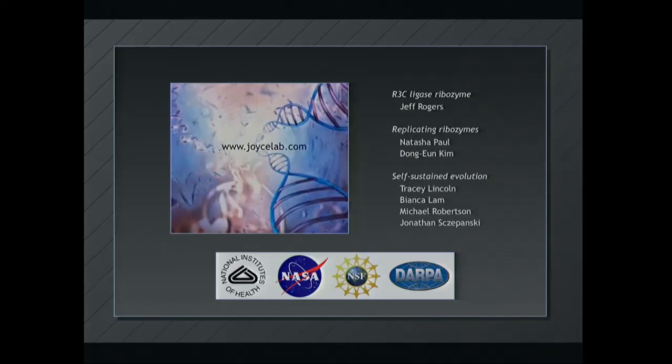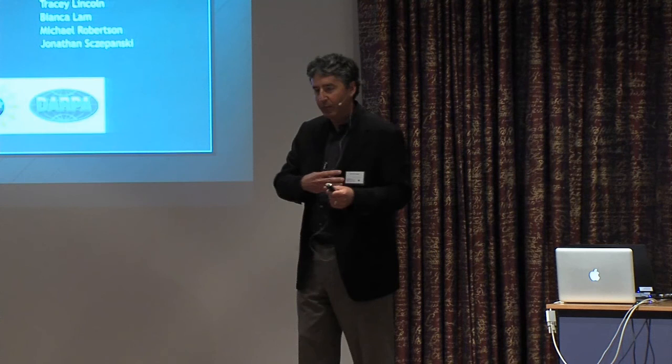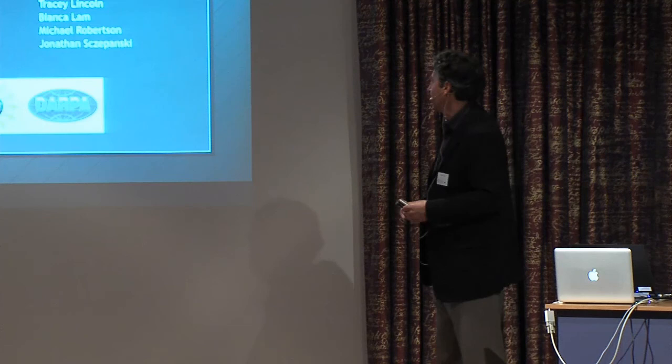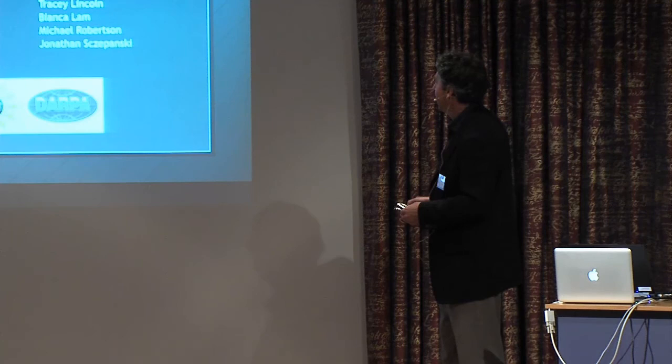I want to thank the people in my lab, most of whose names I mentioned. This R3 ligase ribozyme was originally developed by a former postdoc named Jeff Rogers. Self-replication was first achieved by Natasha Paul, and cross-replication by Dong Yun Kim, former postdocs. But Tracy Lincoln was the person who a couple years ago made this thing, as we say, go critical. Go exponential and never look back, and be able to self-sustain its replication. Bianca Lam did the work on the ligand-dependent replication that I talked about, including the quantitative ligand-dependent replication. And now the ball is being carried by both Michael Robertson and John Sapansky, as they build and explore these ever more complex libraries of self-sustained evolving molecules. Thanks.